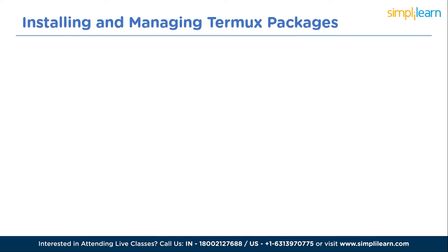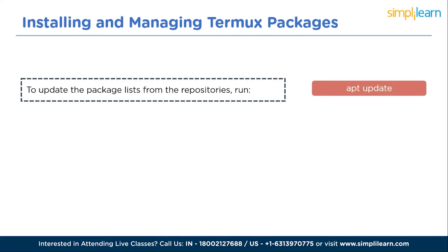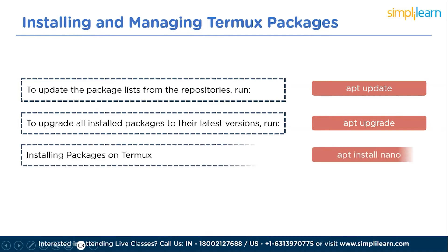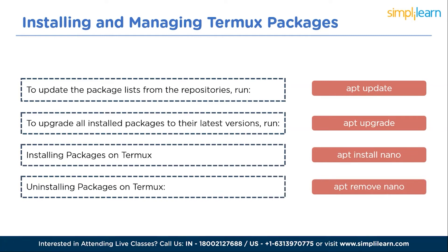Termux comes with its package manager called apt — Advanced Package Tool — which allows you to install, update, and manage various packages. To update the package list run 'apt update'; to upgrade all installed packages run 'apt upgrade'. To install a package, use 'apt install' followed by the package name — for example, 'apt install nano' to install the nano text editor. To uninstall, use 'apt remove' followed by the package name, e.g., 'apt remove nano'.